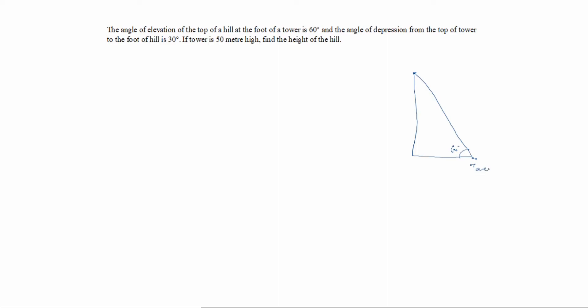The angle of elevation of the top of a hill at the foot of a tower is 60 degrees. This is the top of the hill, and the foot of the tower — so this angle here at the foot of the tower is 60 degrees. The angle of depression from the top of the tower...